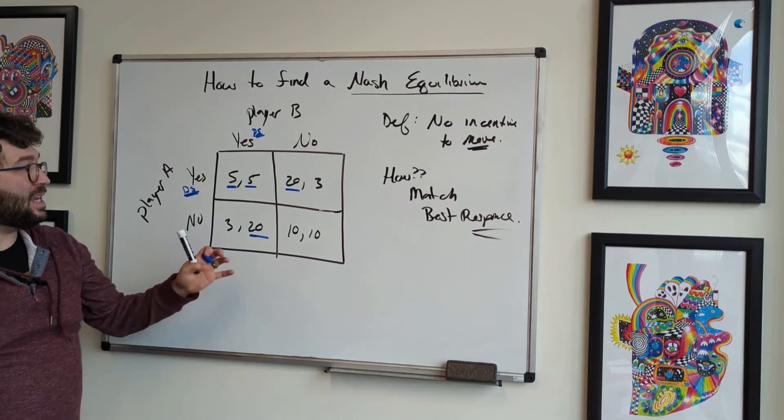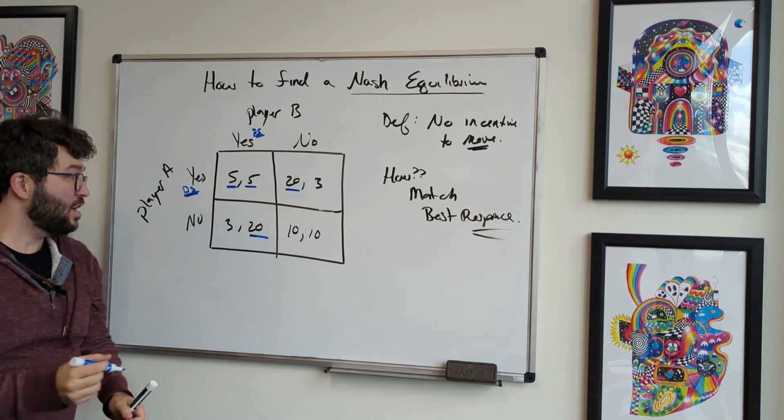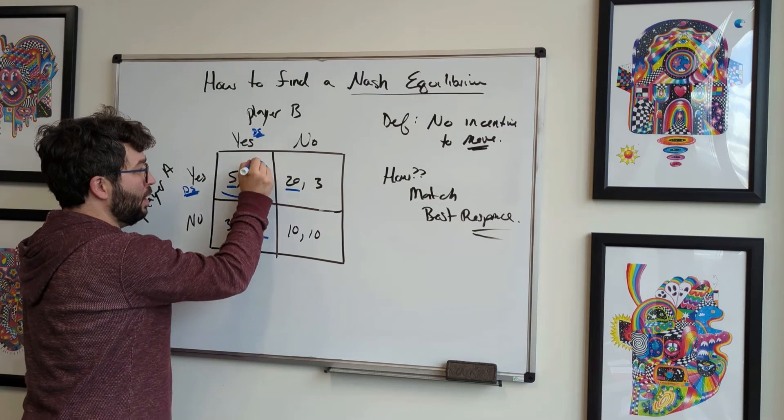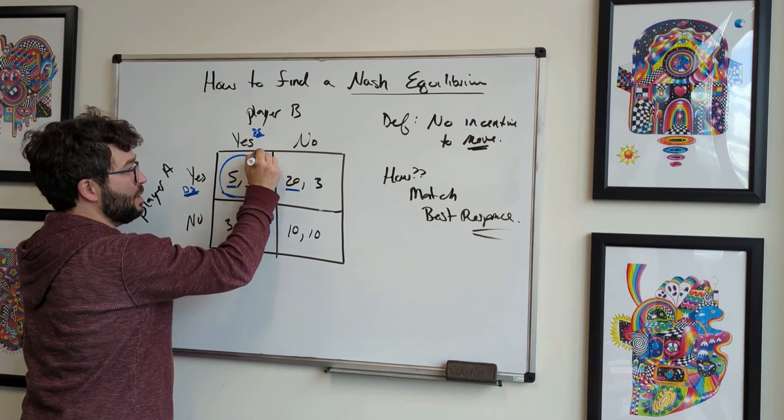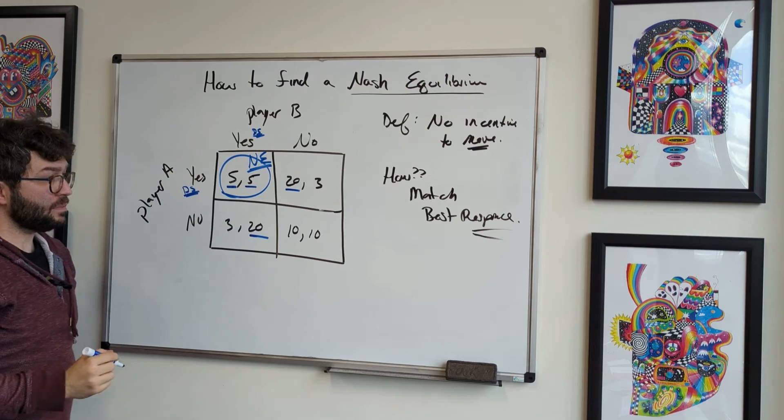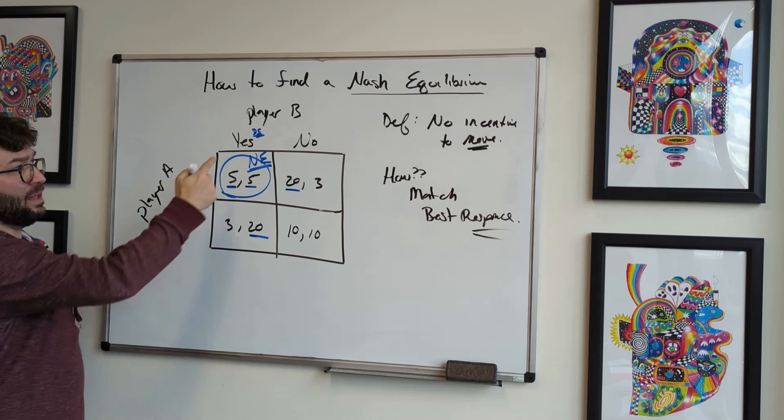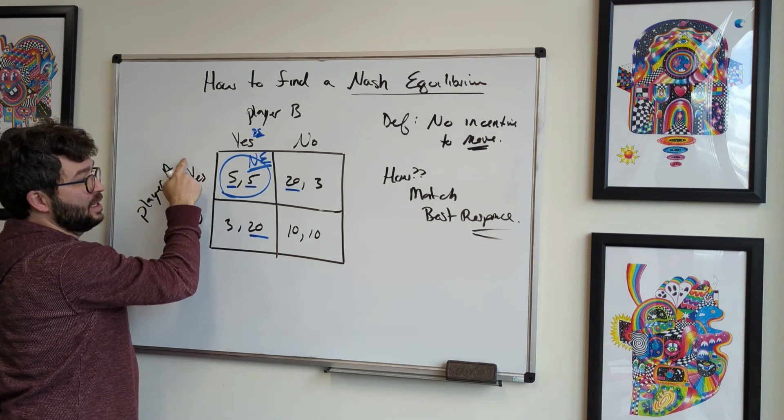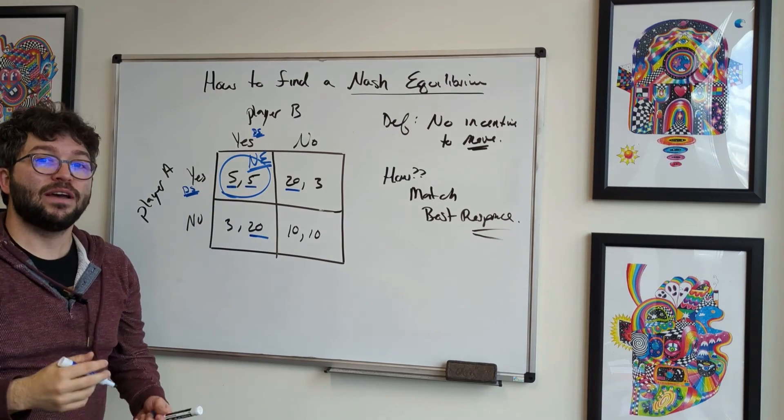And what we see here now is the best responses have been underlined, so we can clearly show that this is going to be our Nash equilibrium. So our Nash equilibrium is going to be when player B plays yes and player A plays yes, and the outcome is going to be five, five.